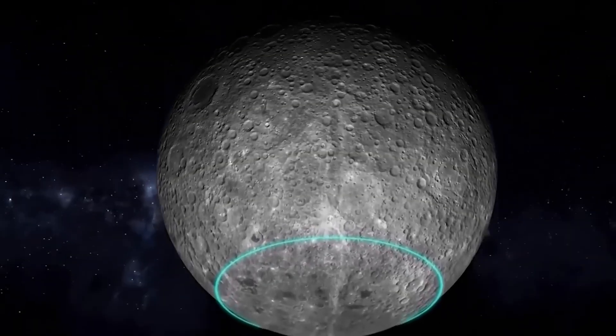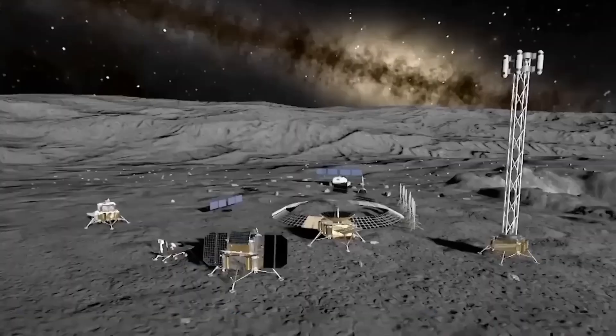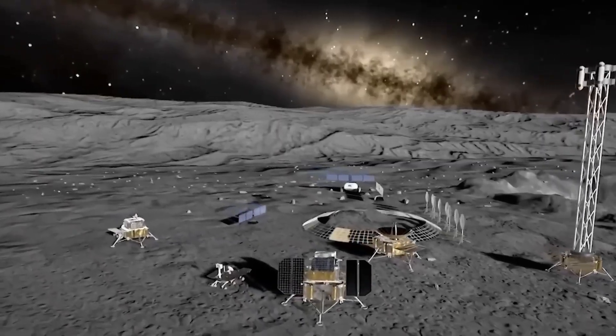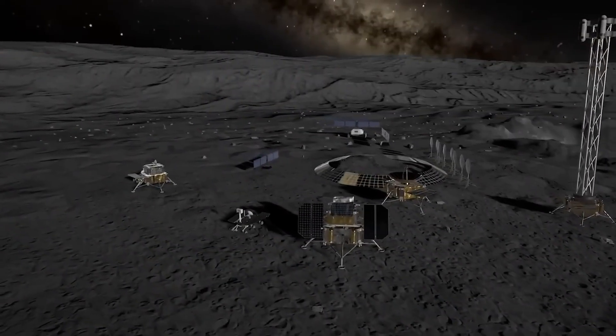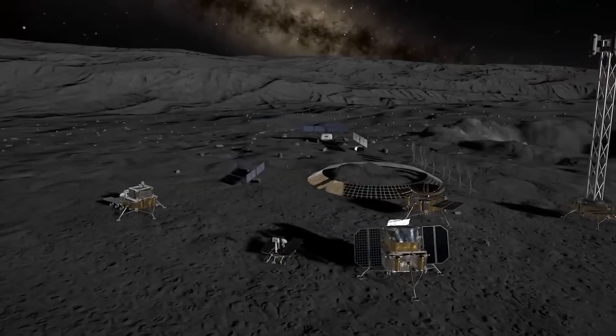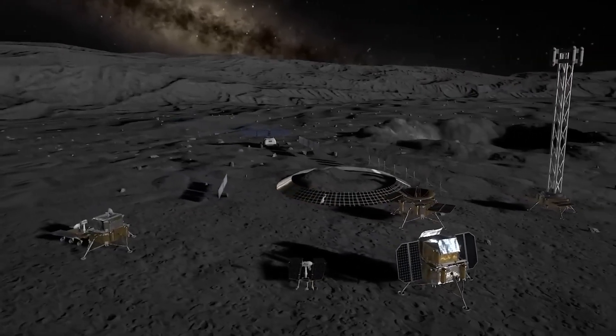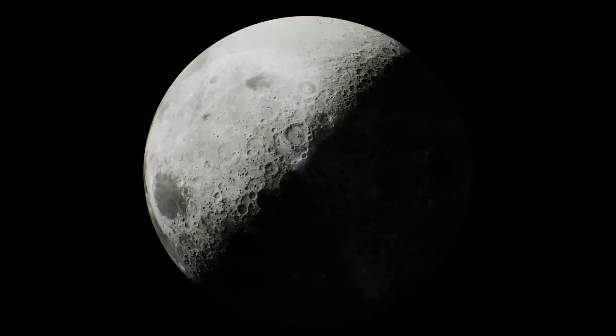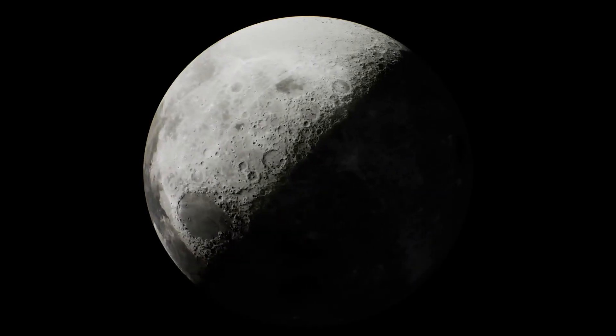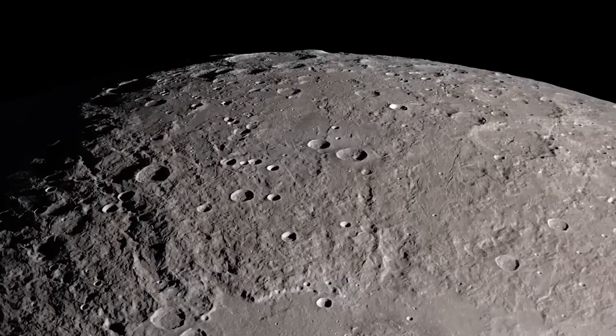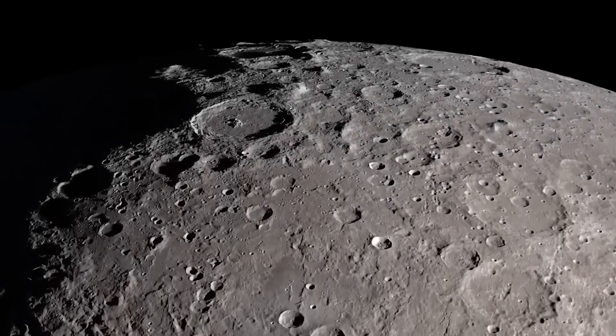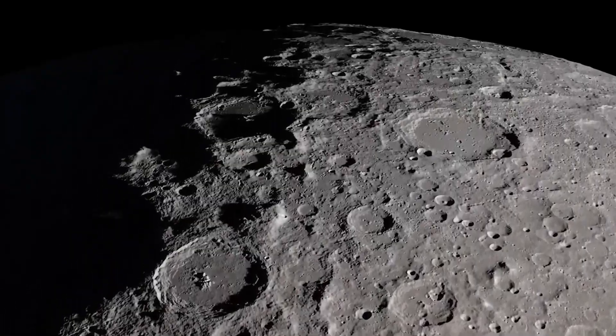And here's the part few are talking about. By controlling the far side of the moon, where communication is limited and surveillance is harder, China could operate with near-total autonomy. In other words, a private space outpost that doesn't rely on international oversight. This is no longer science fiction. It's policy, it's infrastructure, and it's already in motion.